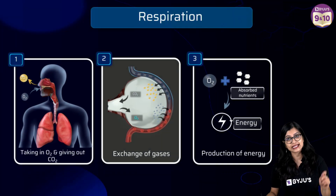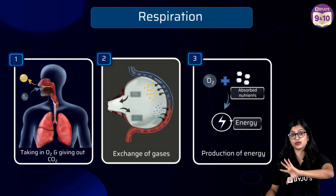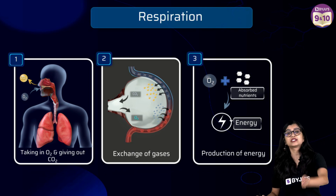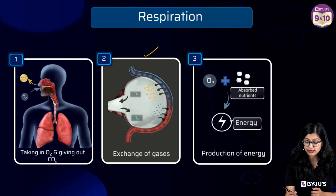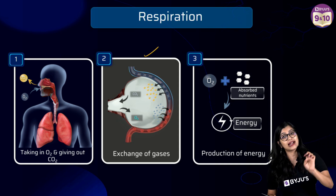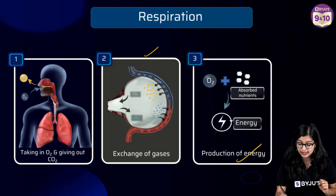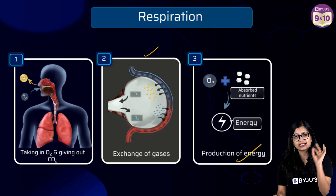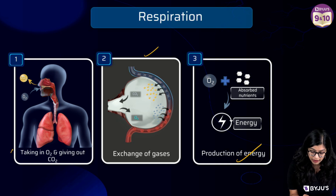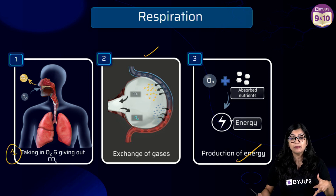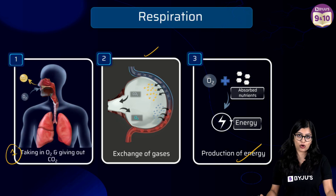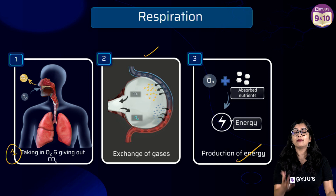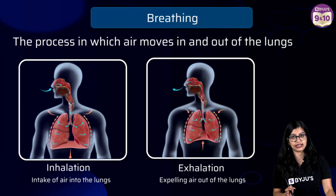First and foremost, oxygen present as a gas in our surroundings must be brought into the body, and from there it needs to enter a transporting system so that it can reach the cells and energy production can take place. There is a physical process by which oxygen enters the body, and this is what we call breathing.